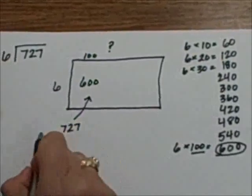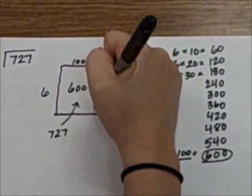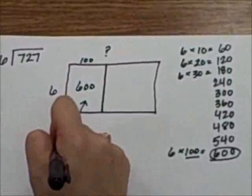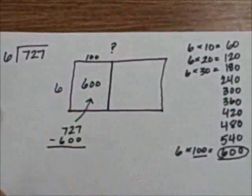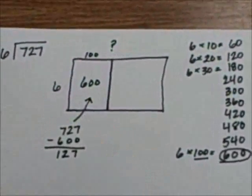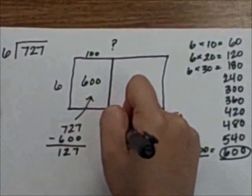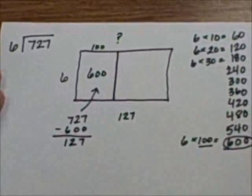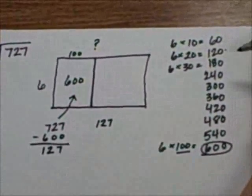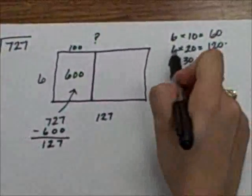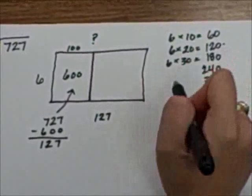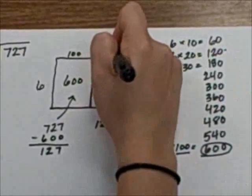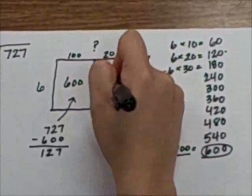However, I have not reached my 727. So if I subtract to figure out how much more I need to go, I will get 127. Now I need to put 127 in the remainder of this box. I see the closest number I can get to is 120. If 6 times 20 is 120, I know I'll have 20 up here and 120 in my box.